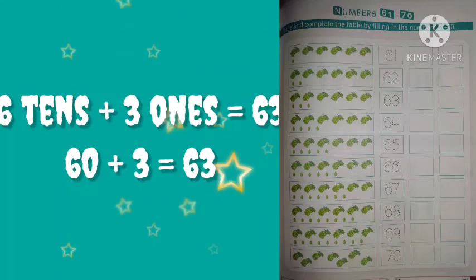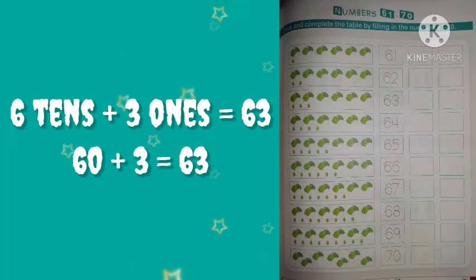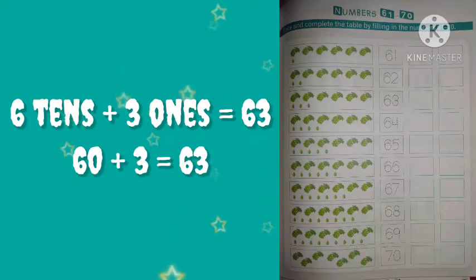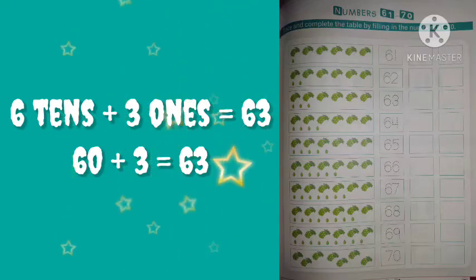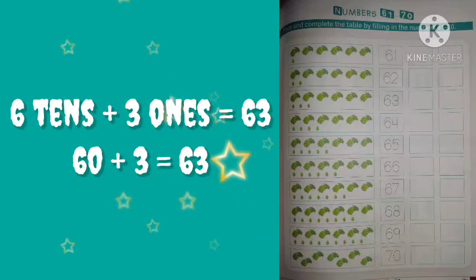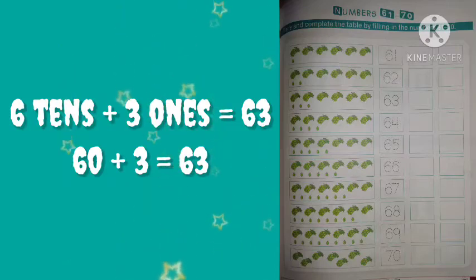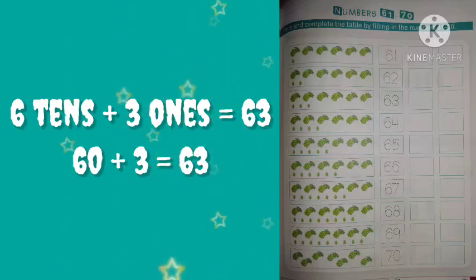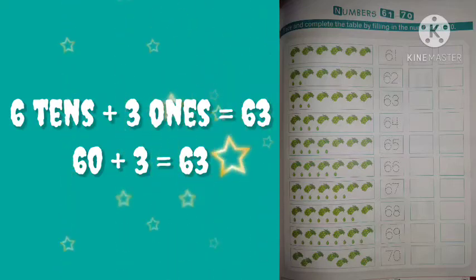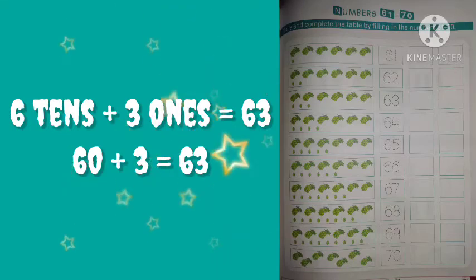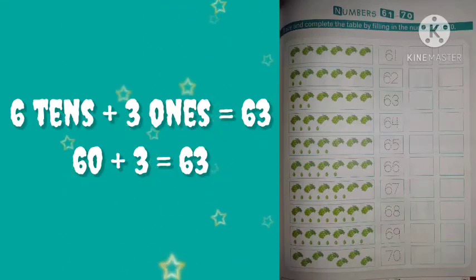In the next box, 6 tens and 3 single graphs, that means 3 ones. 6 tens means 60 and 3 ones means 3. 60 plus 3 is equal to 63.